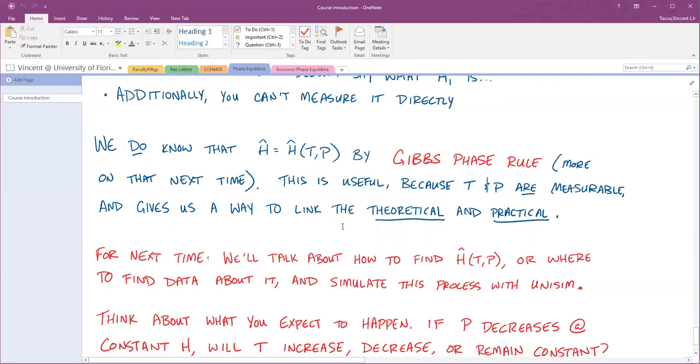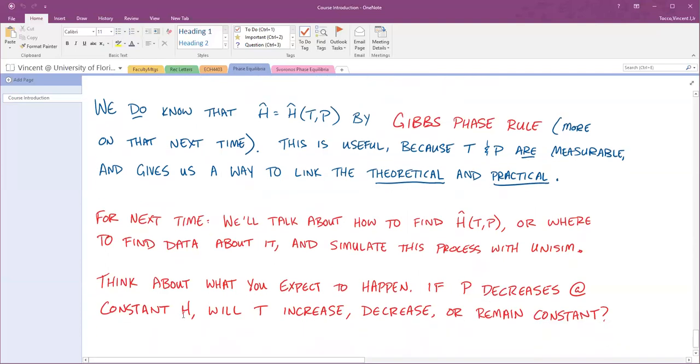Before next time we talk, think about what you expect to happen. In this Joule-Thompson valve, I'm decreasing pressure at constant H. Do you assume that temperature will increase, decrease, or remain the same? If you think about it like it's an ideal gas, you may say that P decreases, and therefore P and T are on opposite sides, so they'll probably go together. If P decreases, temperature also decreases. You might be interested by what you find because this whole time we haven't said anything about what volume does. That's another confounding variable which can affect what the temperature is given pressure and enthalpy. We'll see what happens next time. Do some thinking about it. Download UniSim software. I'll see you next time.